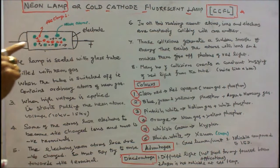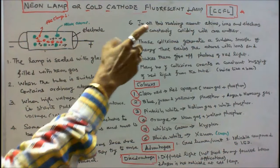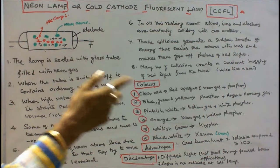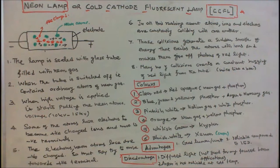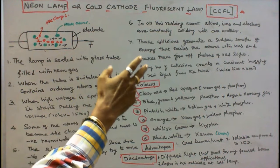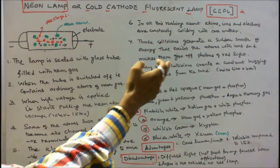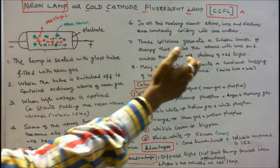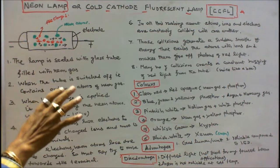In all this rushing about, atoms, ions, and electrons are constantly colliding with one another. Those collisions generate a sudden smash of energy that excites the atoms and ions, making them give off photons of red light. The large number of collisions creates a constant buzzing of red light from the tube. This is the principal operation of a neon lamp.